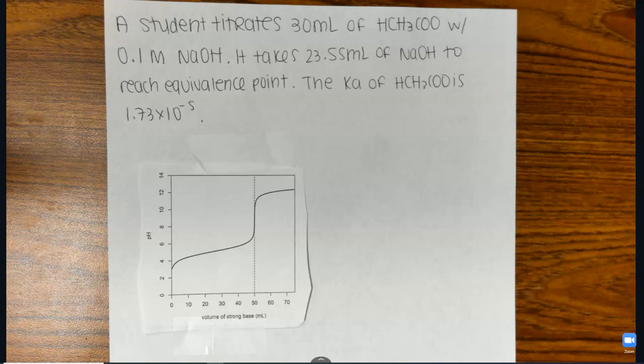So first, you might be given a problem like this. A student titrates 30 milliliters of acetic acid with 0.1 M NaOH. It takes 23.55 milliliters of NaOH to reach the equivalence point. And then you're given the Ka value. So before I even dive into solving this problem, I just want to talk about the basics of a weak acid-strong base titration.